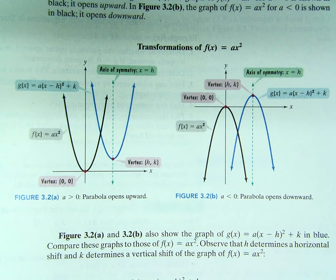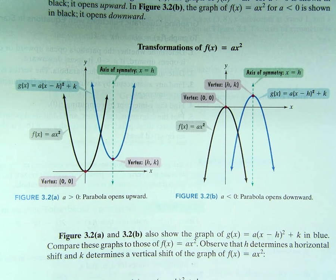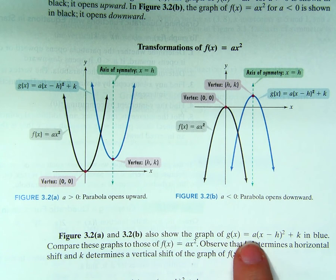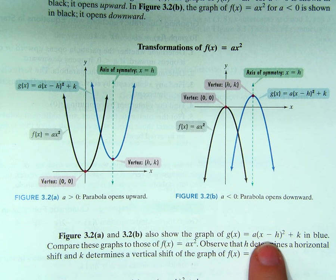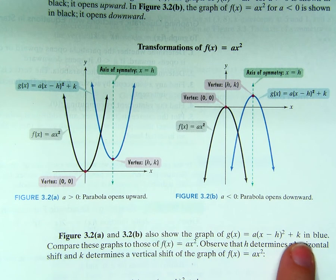So if I gave you a form like... if we're looking at this general form right here, if A is a 2, you know that that's a stretch or a shrink. Since it's a 2, you know it's a vertical stretch.